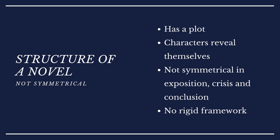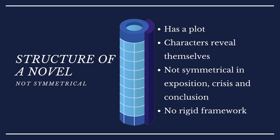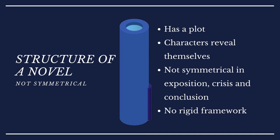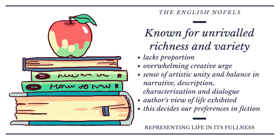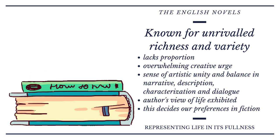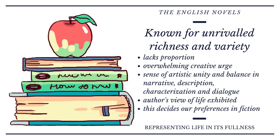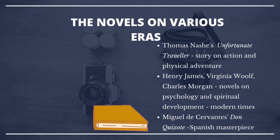What is the structure of a novel? To begin with, it is not at all symmetrical. It has a plot and characters that reveal themselves and are not symmetrical in exposition, crisis, or conclusion. On the whole, the structure of a novel does not have any kind of rigid framework. English novels are known for their unrivaled richness and variety. With an overwhelming creative urge, English novelists have a sense of artistic unity and balance in narrative, description, characterization, and dialogue. The author's view of life is what is exhibited in the novel, and this decides our preferences in fiction. On the whole, novels represent life in its fullness.